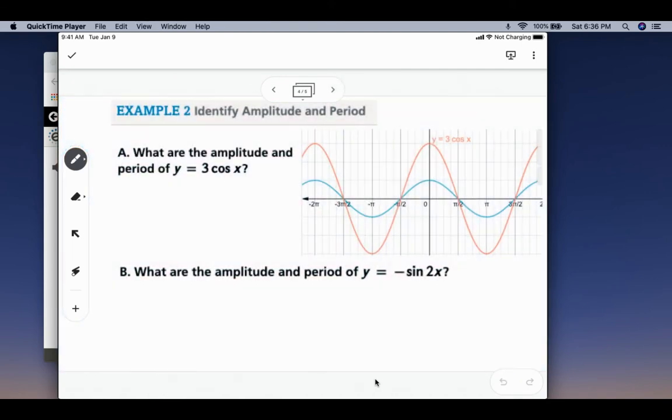So example 2 asks us to identify the amplitude and period of y equals 3 cosine of x. You can see the blue graph is just y equals cosine of x, and the orange graph is y equals 3 cosine of x. So the only difference between those two graphs is the 3, and that 3 is going to change the amplitude.